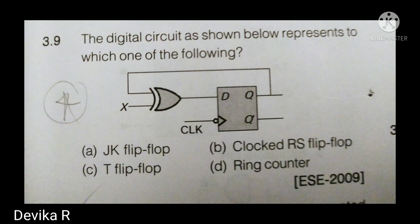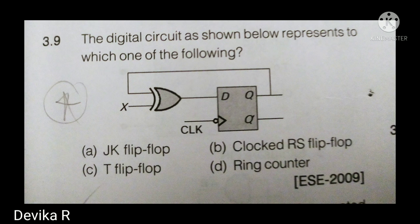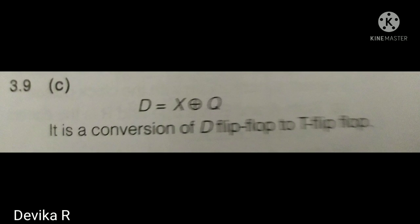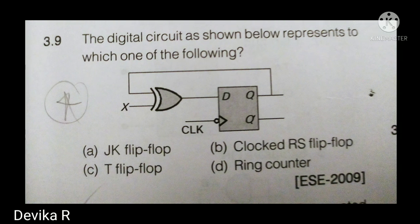The next question shows a circuit with one D flip-flop and one XOR gate connected as an input to the D flip-flop, with the output also fed back as one input of the XOR gate. Using the characteristic equation of the T flip-flop, D = X XOR Q. Since the XOR gate takes input X and the feedback output Q, this implements a T flip-flop. The answer is T flip-flop — option C.